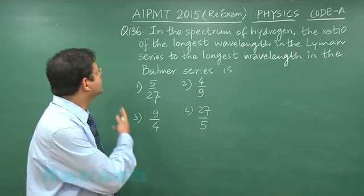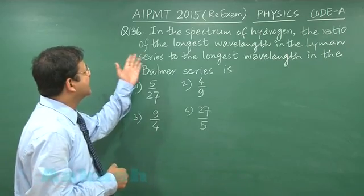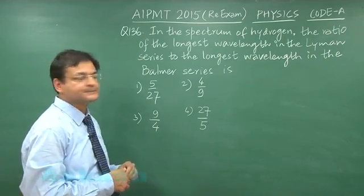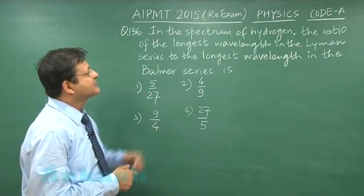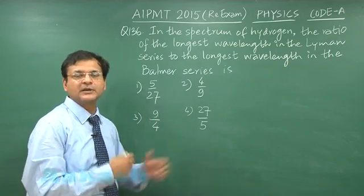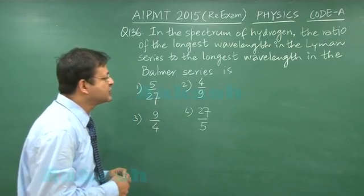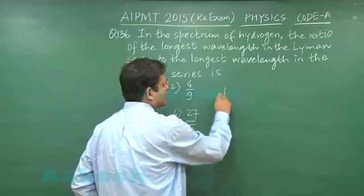the physics questions are beginning from question number 136 as you can see and this question reads that in the spectrum of hydrogen the ratio of the longest wavelength in the Lyman series to the longest wavelength in the Balmer series is - you have to calculate the ratio of the two lines and essentially this is using the Rydberg formula